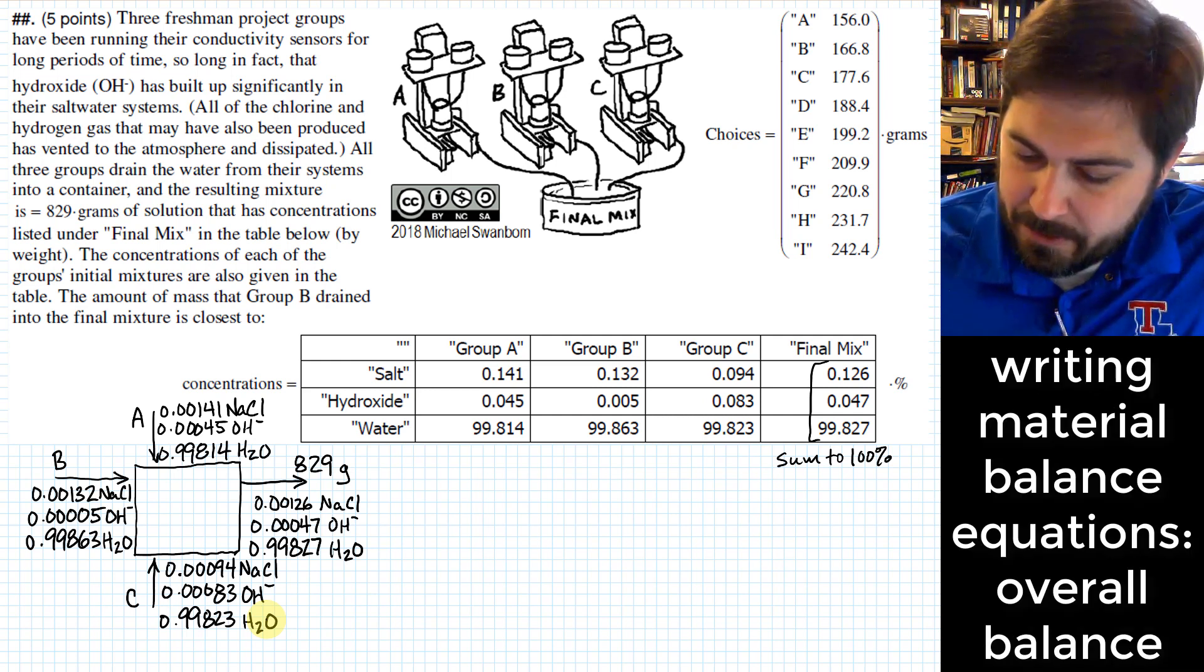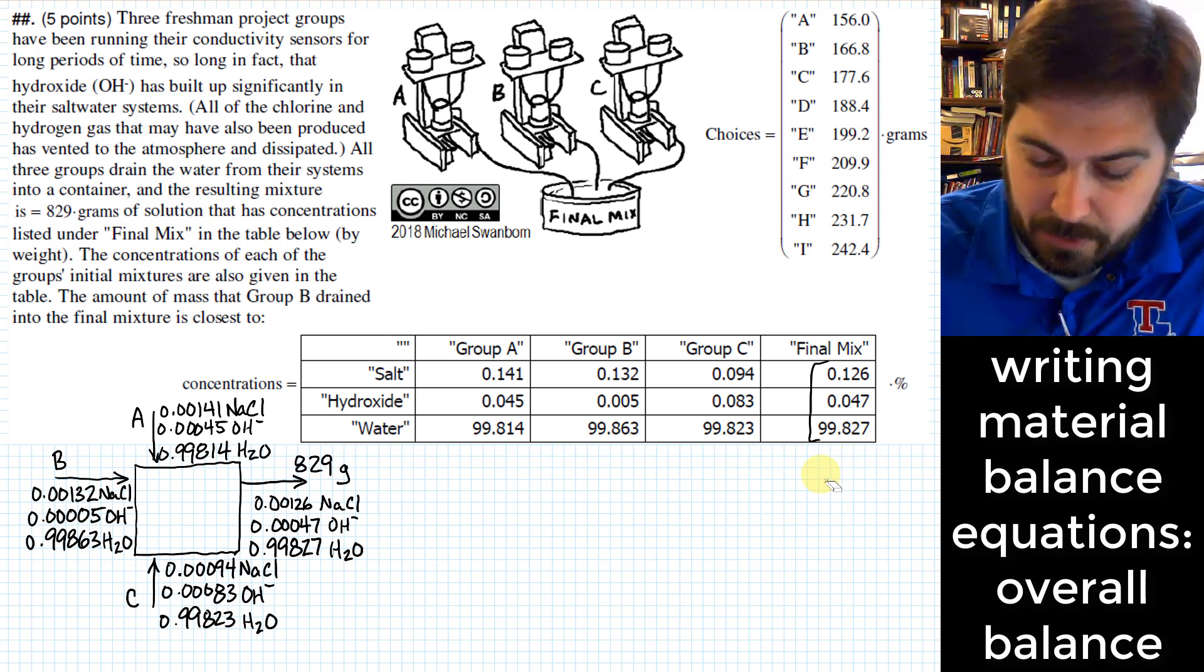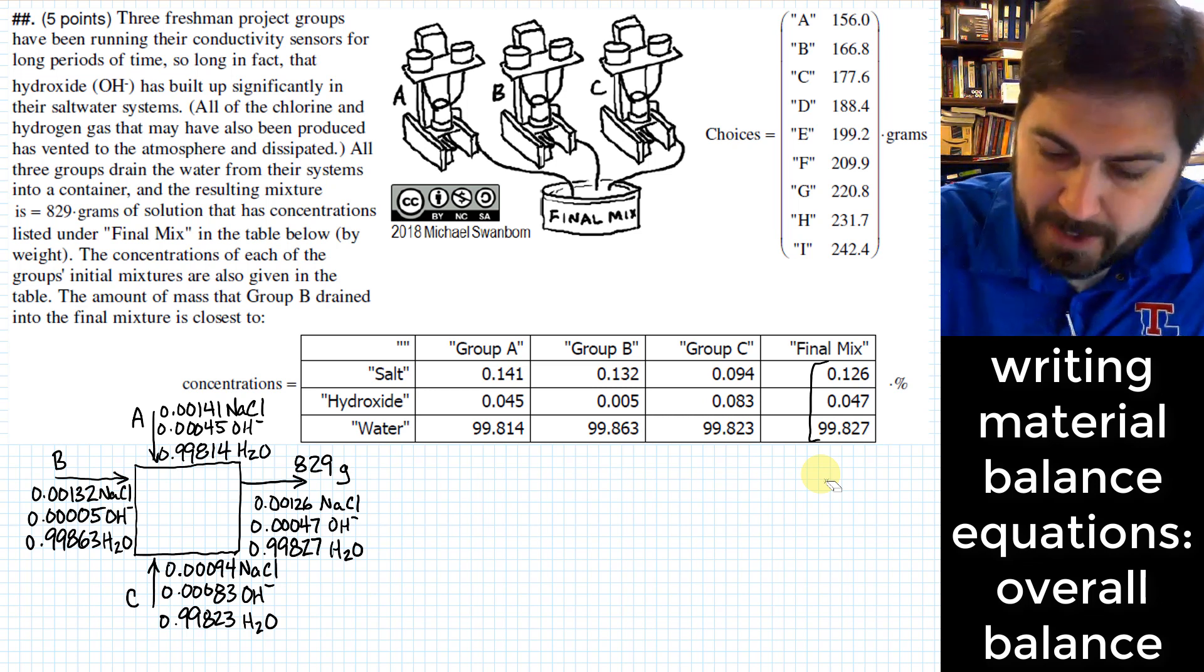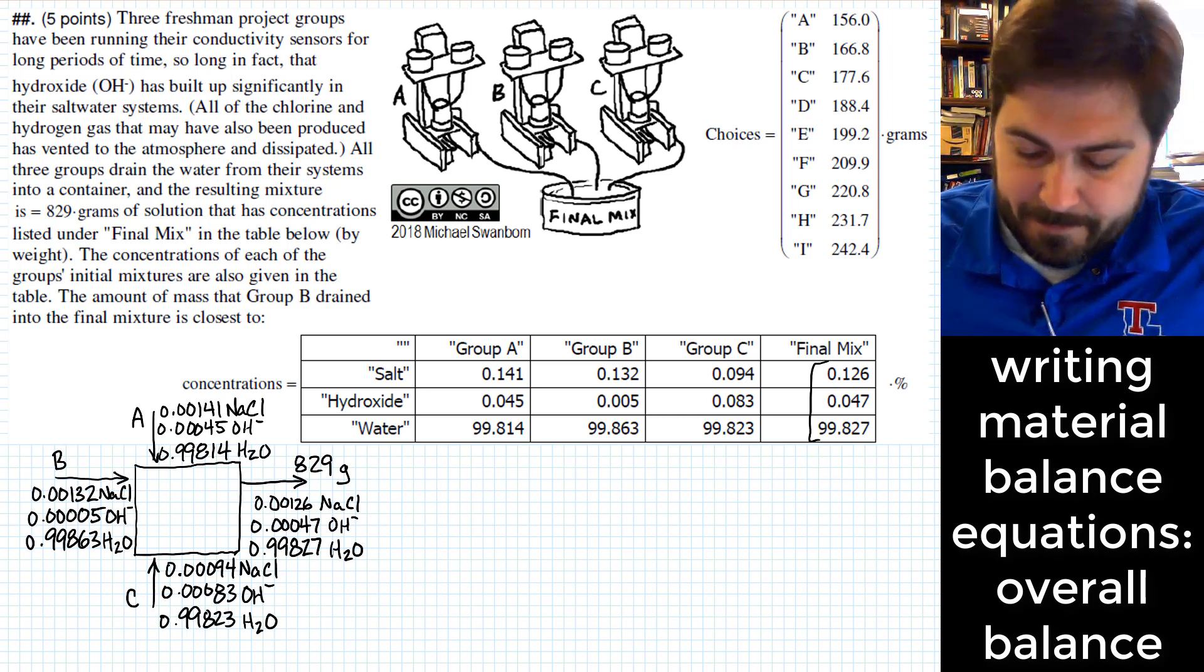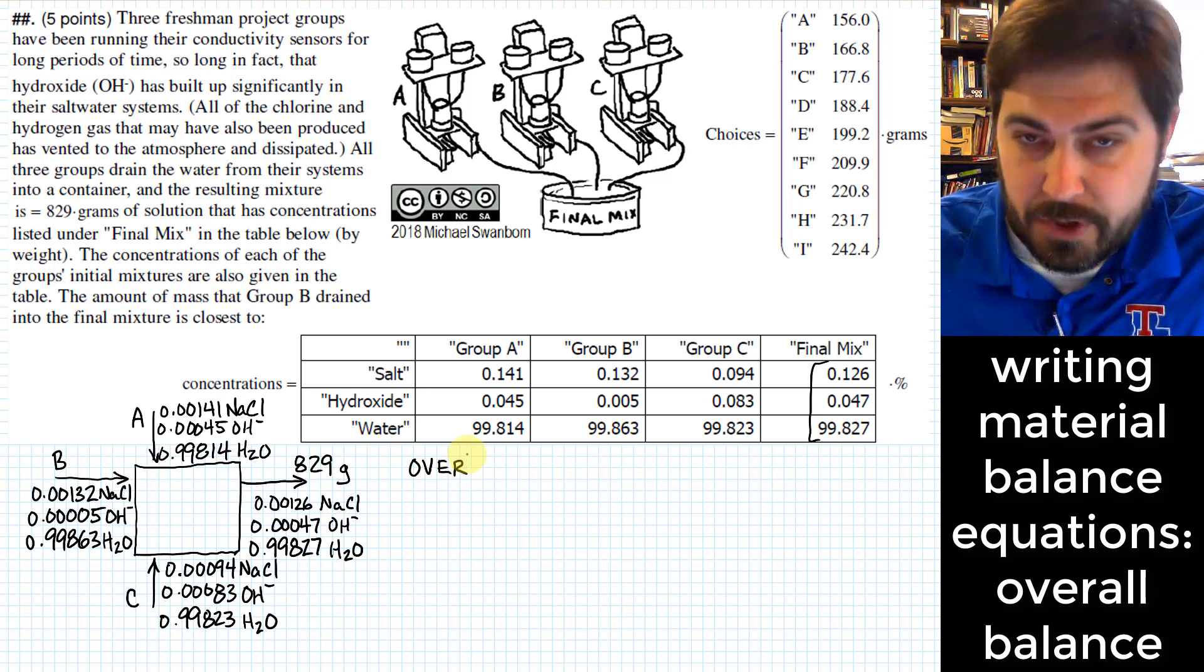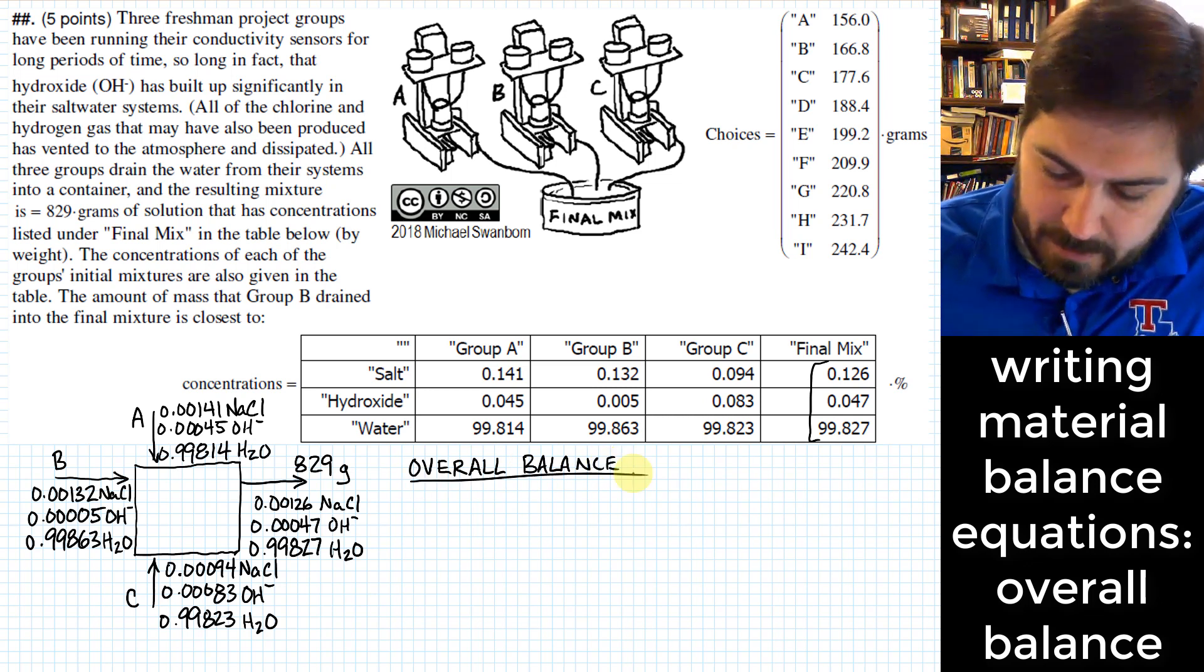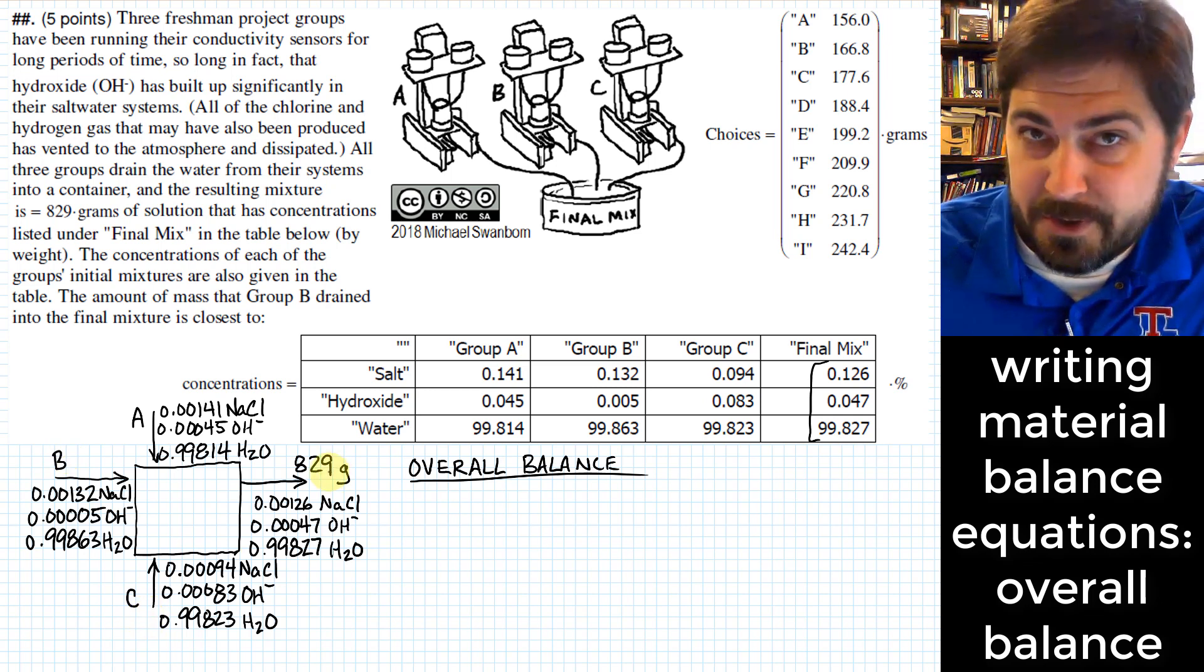What we need to do now is we need to write some equations for some of the components that we are going to combine together. And very often, I find it easiest to just start with an overall, so that's what I'm going to start here. So this is just all the mass that enters the mix should equal the mass that exits the mix, so that's the overall balance. This is pretty easy. We just have A plus B plus C should equal 829 grams.